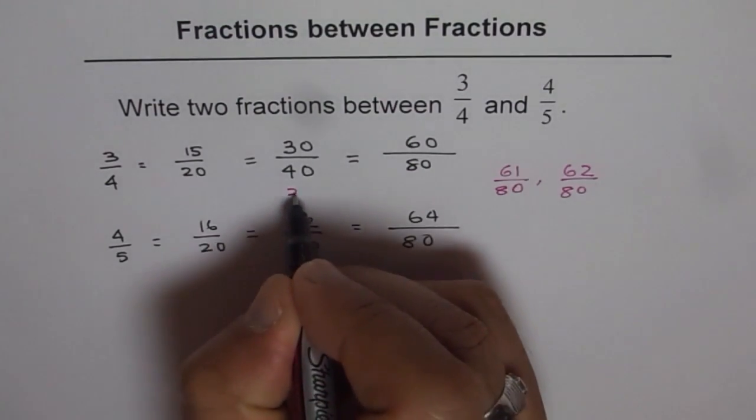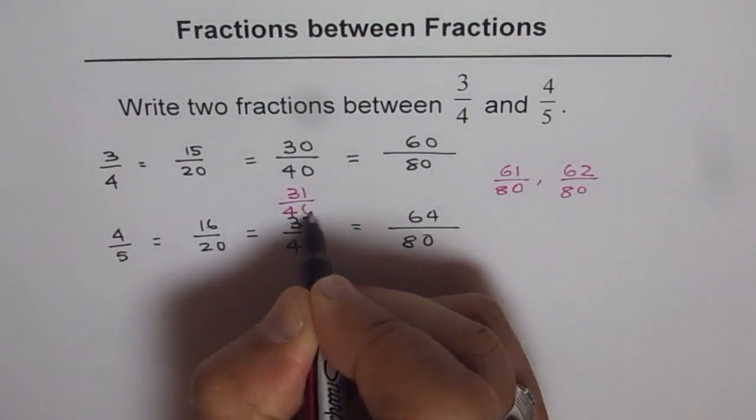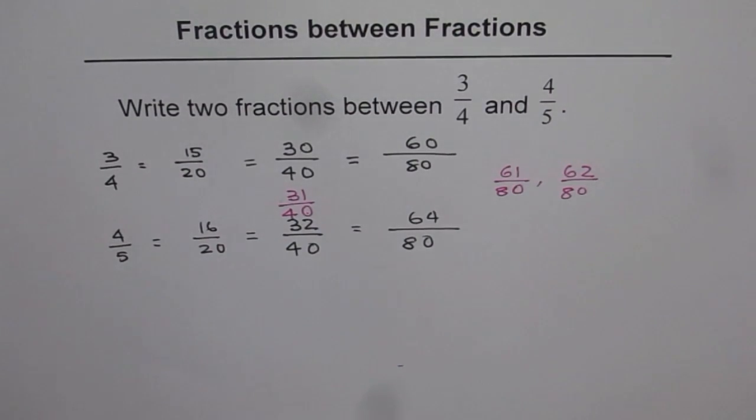As you saw, we have 31/40, which is the same as 62/80. Like this, we can write fractions between fractions. You can continue this series and write an infinite number of fractions between any two fractions. I hope you appreciate it. Thank you.